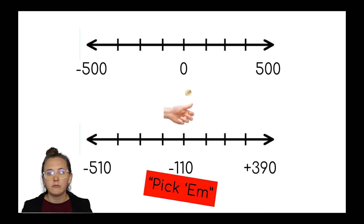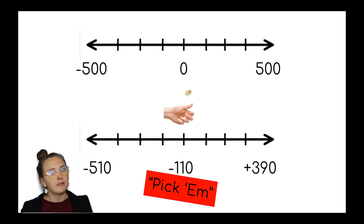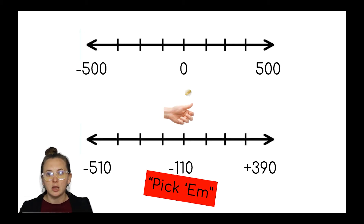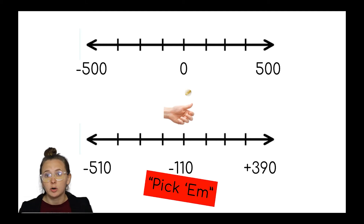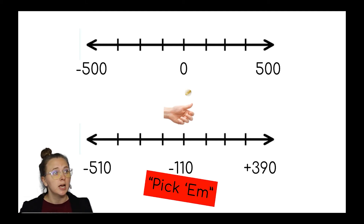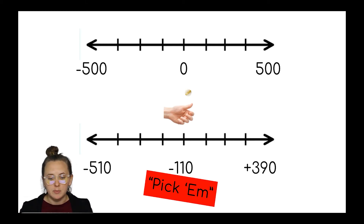So if there's 100 people, half of them bet on one person and half of them bet on the other, and it's plus $100 or minus $100, either way you look at it, the casino will walk away with no money. But because it's minus $110, the casino is getting their cut.